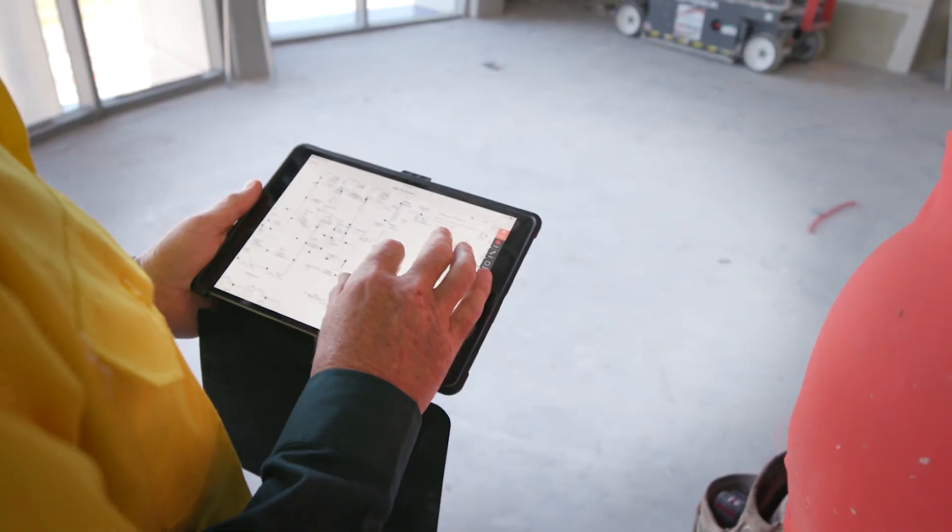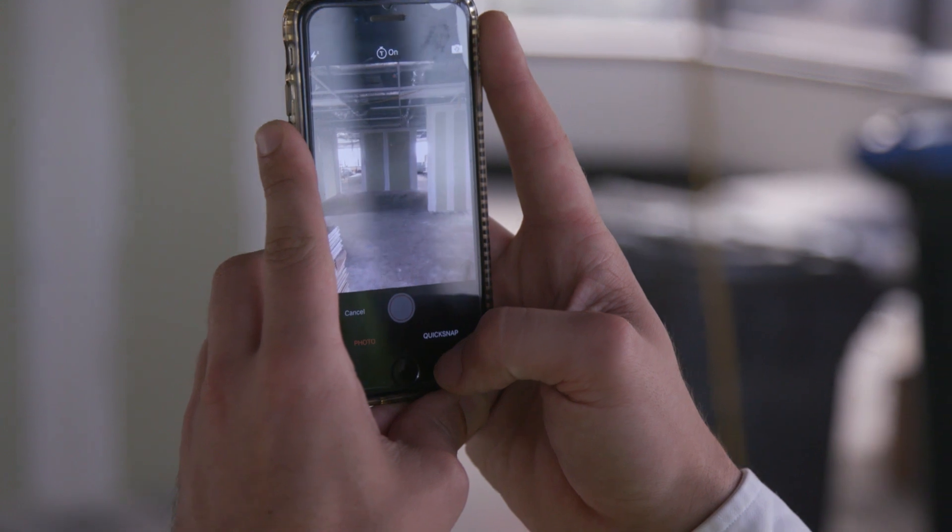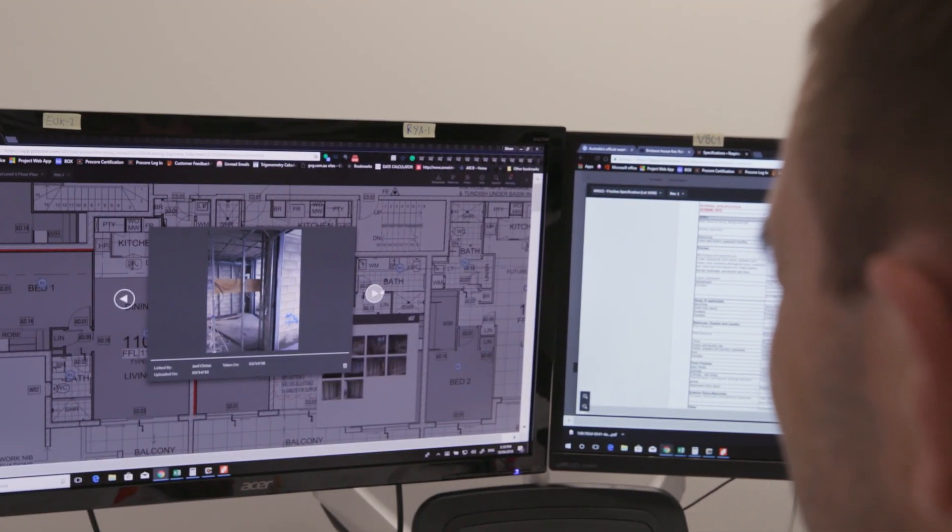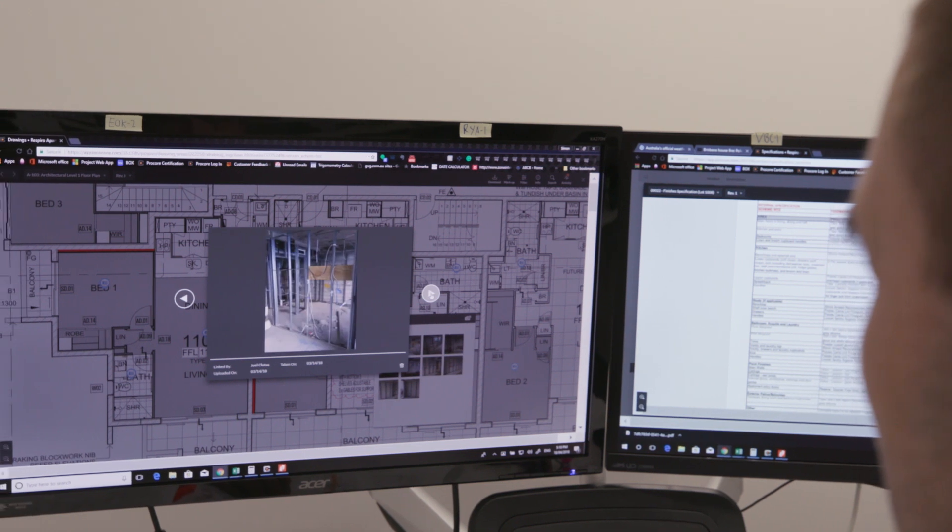With a paper trail, you've got to go back, scan, and send it through. But right there, on the spot where something's happened, you can have the photo marked up with notes. You can send that away to whoever needs to see it on the platform and is involved in that particular project.